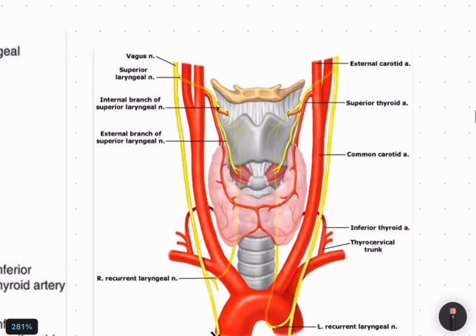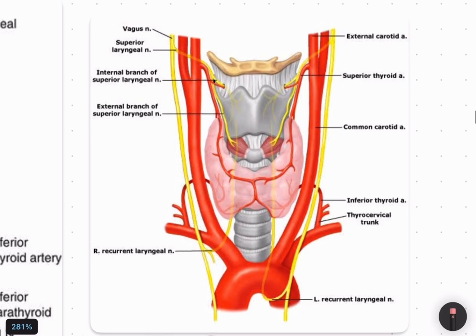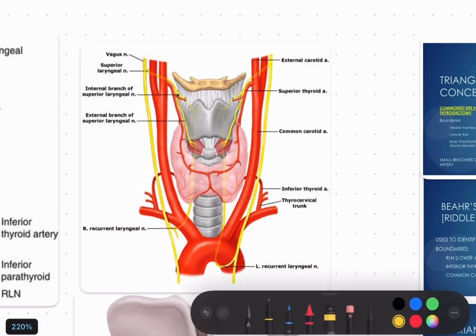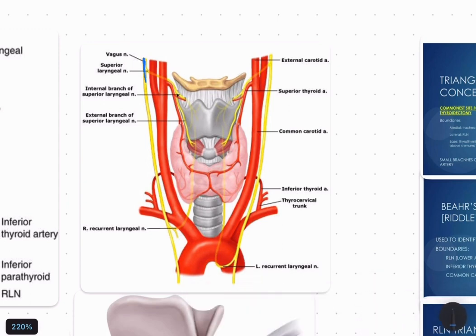To summarize: the vagus nerve gives the superior laryngeal nerve and the recurrent laryngeal nerve. The superior laryngeal nerve gives the external laryngeal nerve and internal laryngeal nerve. The internal laryngeal nerve supplies sensory innervation above the vocal cord. The external laryngeal nerve follows the superior thyroid artery — that is why we apply the ACCA rule: close to the gland they are away from each other, and away from the gland they are close to each other.